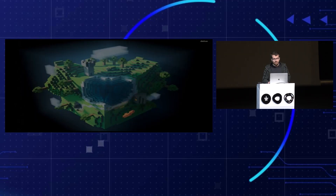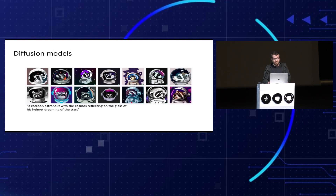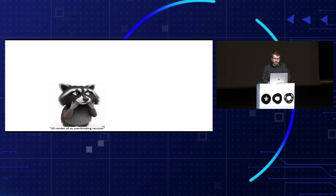Meanwhile, in this year, in another domain called the pixel planet, we see that diffusion models are booming for the task of text to image, both in quality and diversity. They model very well the distribution of images given a text prompt. We want to adapt those attributes for motion generation. But we still wonder: do we have enough data? The answer is yes, though it remains an open question why it works so well with limited data.